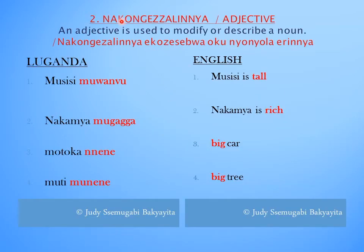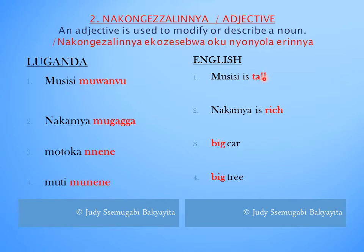The second part of speech is Nakungesalinya, which is Adjective in English. An adjective is used to modify or describe a noun. Nakungesalinya yiko zisibwa oku nyonyula erinya. For example: Musisi muamvu — Musisi is tall. Nakamya mugaga — Nakamya is rich.